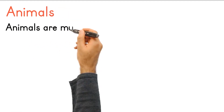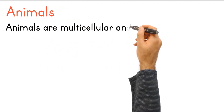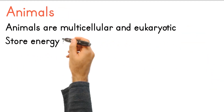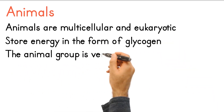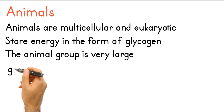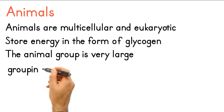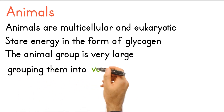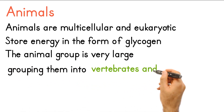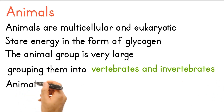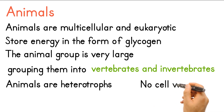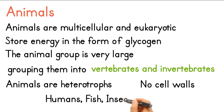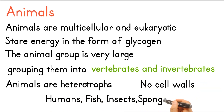Animals are multicellular and eukaryotic. They store energy in the form of glycogen. The animal group is very large and can be divided into smaller groups: vertebrates and invertebrates. Animals are heterotrophs and have no cell walls. Examples include humans, fish, insects, and sponges.